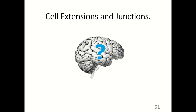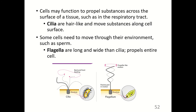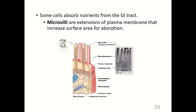Cells may function to propel substances across the surface of a tissue, such as in the respiratory tract. Cilia are hair-like and move substances along the cell surface. Some cells need to move through their environment, such as sperm. Flagella are longer and wider than cilia and propel the entire cell. Both cilia and flagella are made of microtubules. Microvilli are extensions of the plasma membrane that increase the surface area for absorption, seen in the cells of the small intestine.